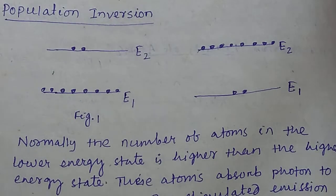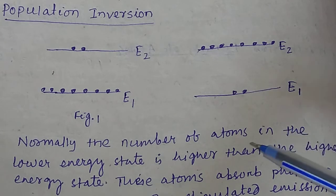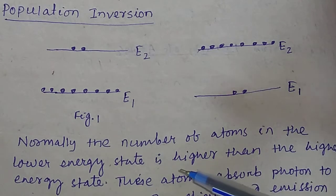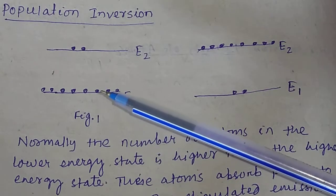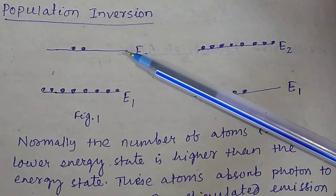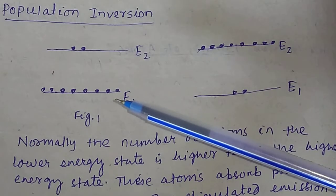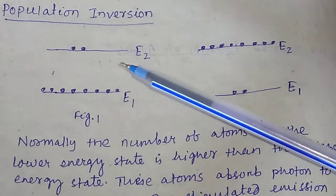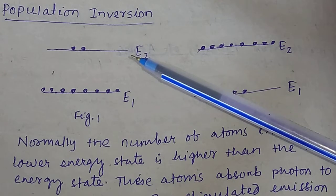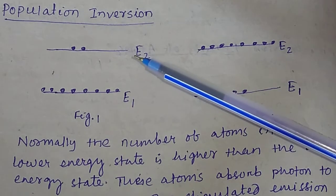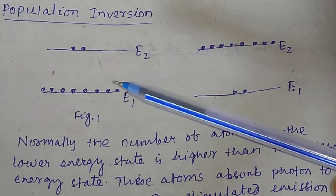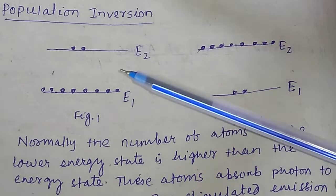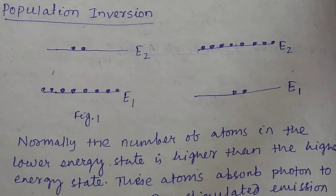So what is population inversion? In most materials, normally the number of atoms in the lower energy state is higher than in the higher energy state. This is the lower energy state and this is the higher energy state.